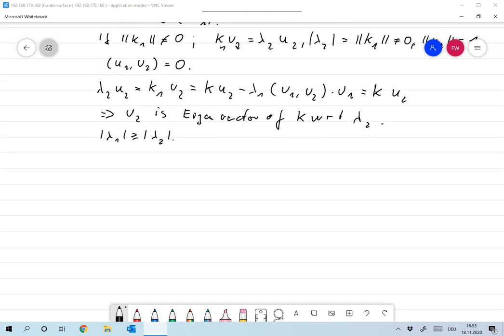It's quite obvious what we'll now be doing. I define an operator kₙ as kₙu as ku minus the sum from k equals 1 to n of λₖ times the scalar product of u and uₖ times uₖ.